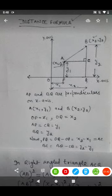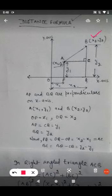Similarly, the x-axis of point B is x2, which means the distance of this point B from the origin is x2. We can represent this here. So the distance between point O and Q is x2.